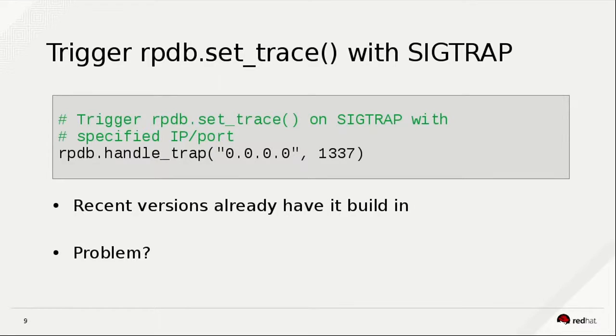RPDB is very similar to PDB — it gives you the exact same interface. You can install it using pip. With RPDB, instead of giving you the interface directly into stdin and stdout, it will listen on some port, and then you can connect to it using Telnet remotely. The same problem exists though — we need to put a breakpoint inside the code and restart the program, which is bad if we have a program that is deadlocked and we don't know how to reproduce this. Another very cool feature with RPDB is we can trigger it automatically whenever the program receives a SIGTRAP.